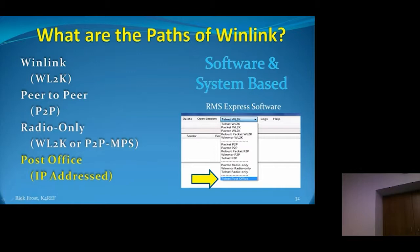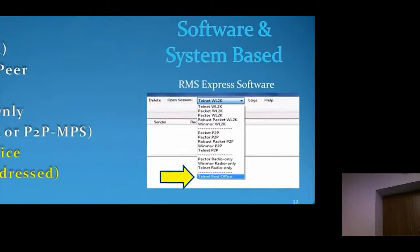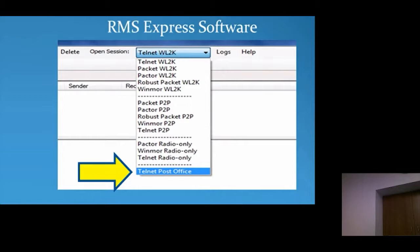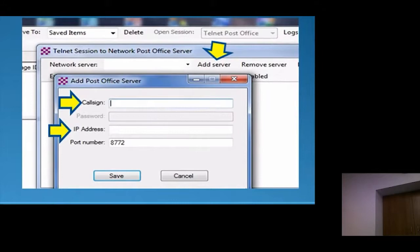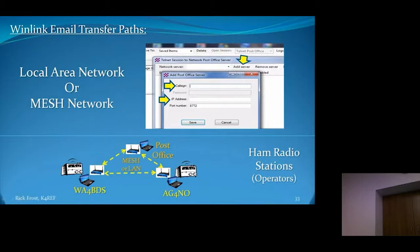The last path is Post Office, which uses a local area network or a mesh network. In RMS Express, the Telnet Post Office session is listed in the session dropdown. By choosing Telnet Post Office, you select a particular call sign and computer IP address as the location for the WinLink Post Office on that network. A mesh network uses wireless routers operating on amateur radio frequencies to transfer information. Email is sent to the Post Office to be held until the receiving user checks in for it, all using RMS Express.